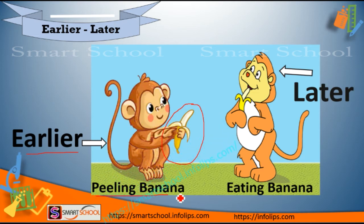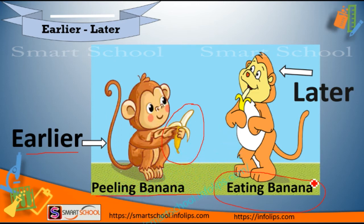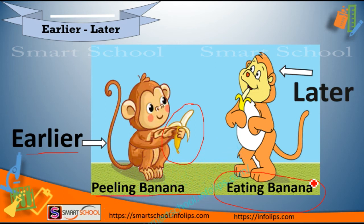Earlier is what? Peeling banana. Earlier means previous. And later is what? Eating banana. Earlier means previous — which activity we are doing first, that is earlier. And which activity we are doing later, that is later.